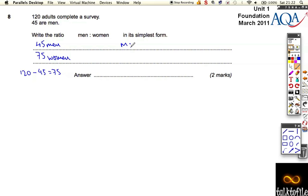Men to women, we get the ratio 45 men to 75 women. So let's divide both of these by five. What do we get if we divide by five? We get nine...